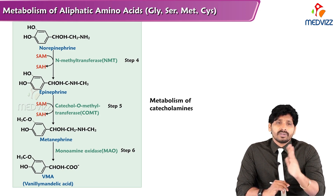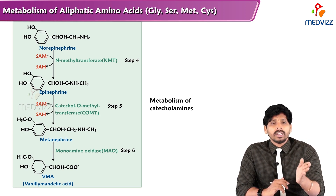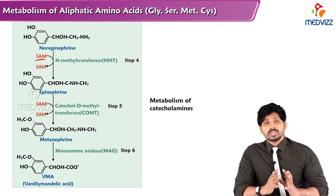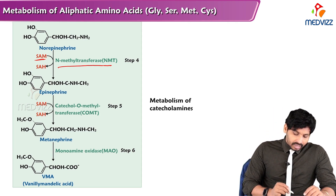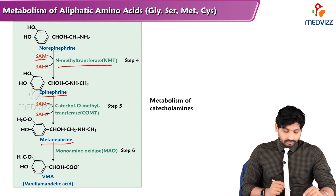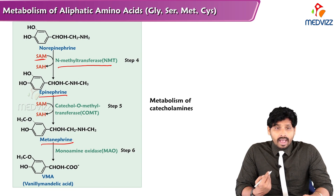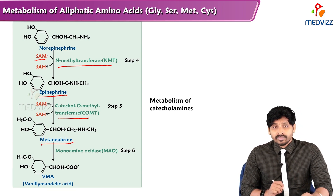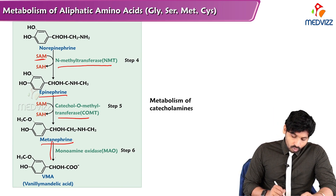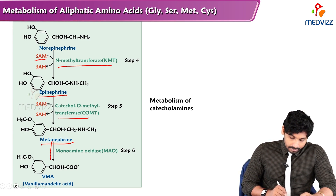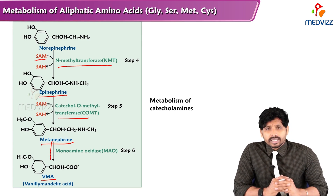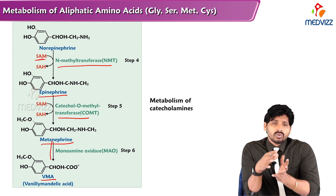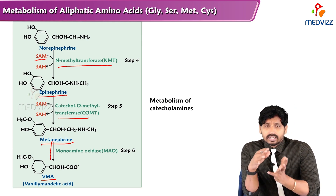Once SAM donates its methyl group it is converted to S-adenosylhomocysteine. Epinephrine can then be further methylated to metanephrine by catechol-O-methyltransferase (COMT). With the help of monoamine oxidase (MAO), metanephrine is converted to vanillylmandelic acid (VMA), which is the urinary excretory product of catecholamines.